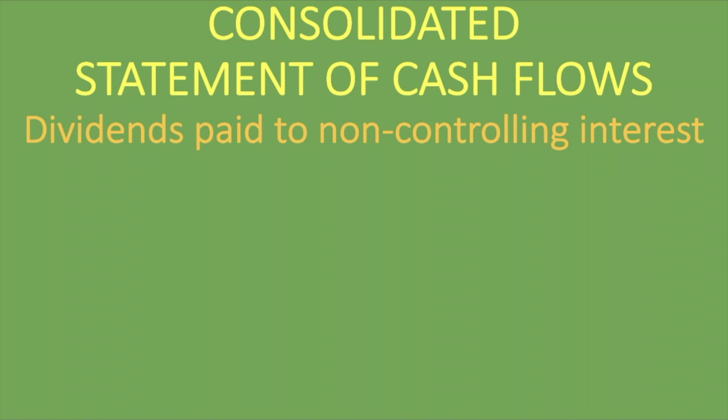What are dividends paid to non-controlling interest? When a company purchases a subsidiary, unless you've purchased 100% of the subsidiary, you will likely have dividends paid to non-controlling interest. So when you've been asked to do the consolidated statement of cash flows, you also have to do these calculations. If a dividend is paid by the subsidiary and you do not own 100% of it, part of the dividend will go to non-controlling interest.